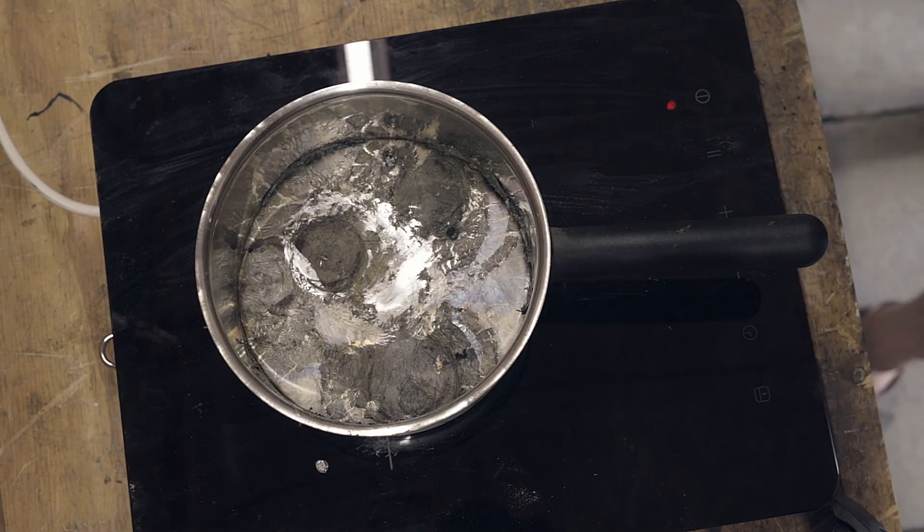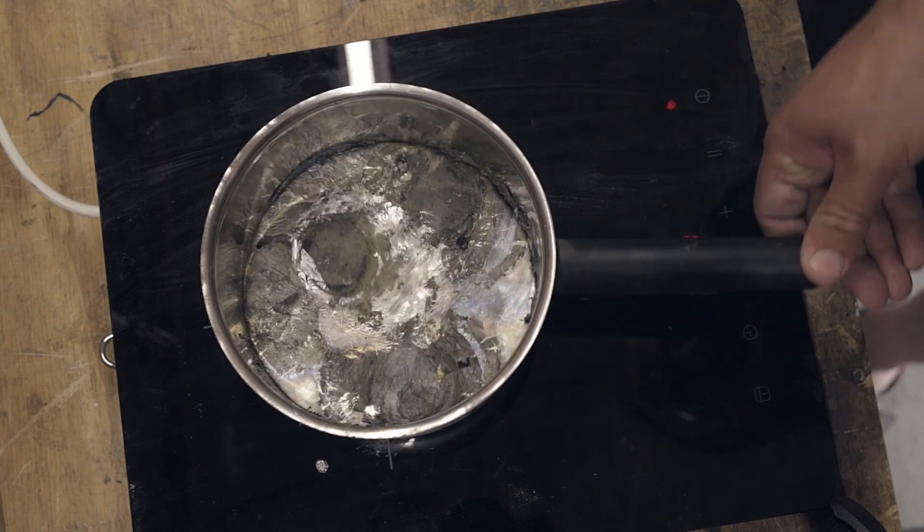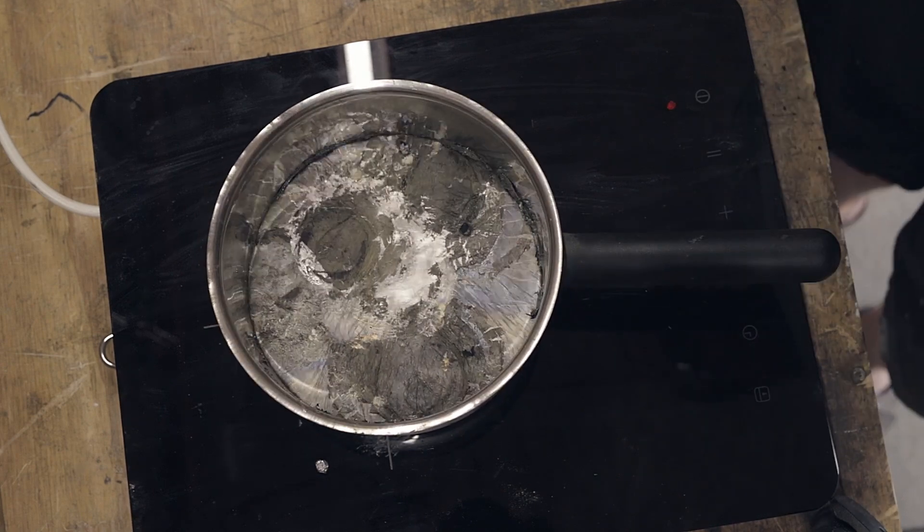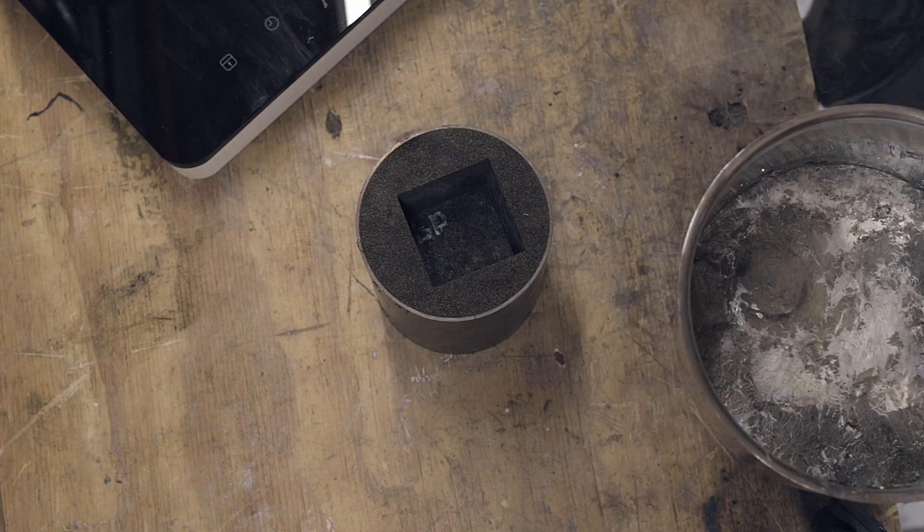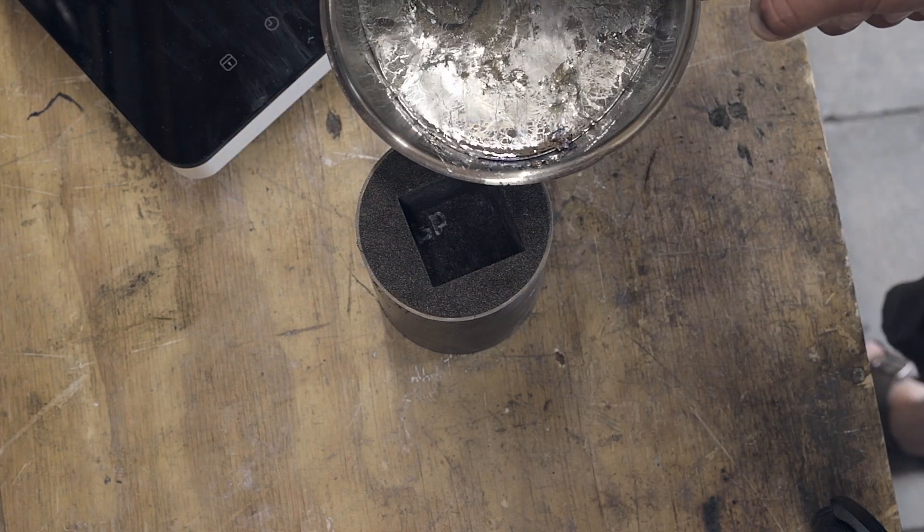Seven minutes later the lead has reached its melting point of 327 degrees C and can be gently poured into the sand mold while trying to aim away from the letters so they don't get knocked over.